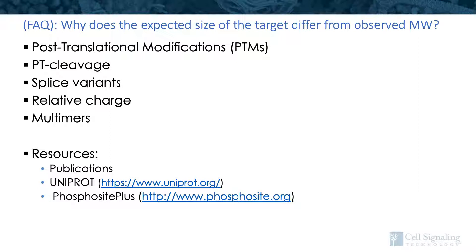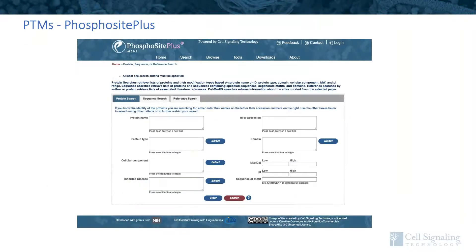Listed here are resources to help navigate these size differences. Publications are a great source. UniProt provides protein sequence and functional information, and PhosphoSitePlus is a comprehensive resource for investigating the structure and function of experimentally determined post-translational modifications in human and rodent samples. This was actually created at CST and is maintained and curated by our own group of bioinformatic scientists. Researchers and many companies around the world use the information curated in this site.